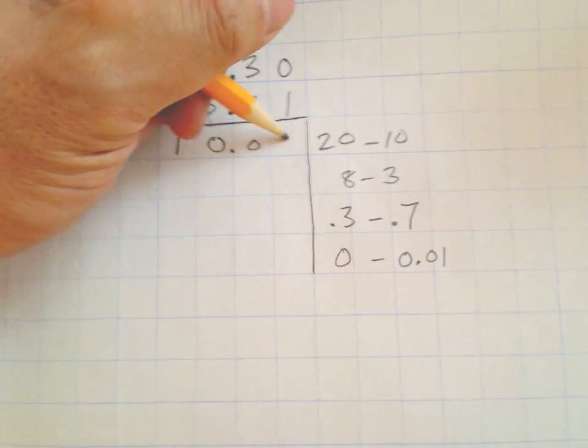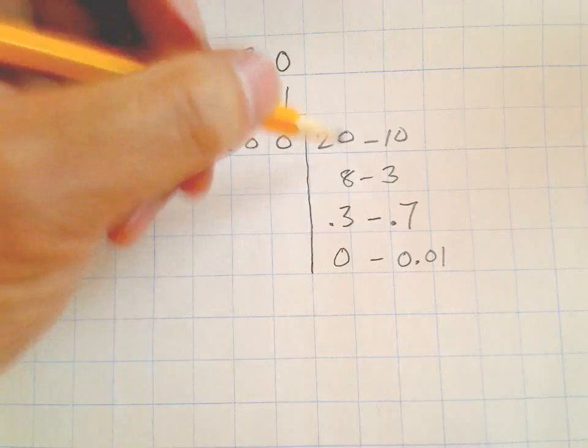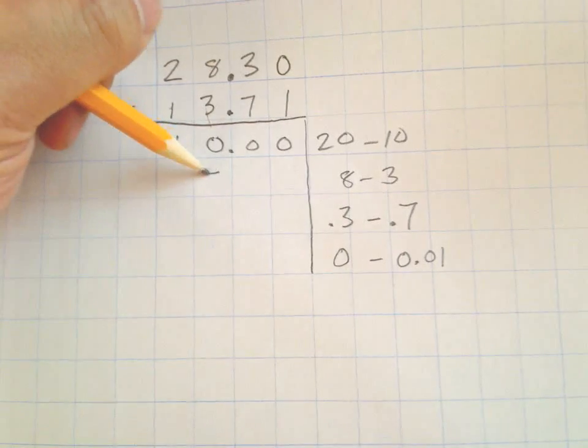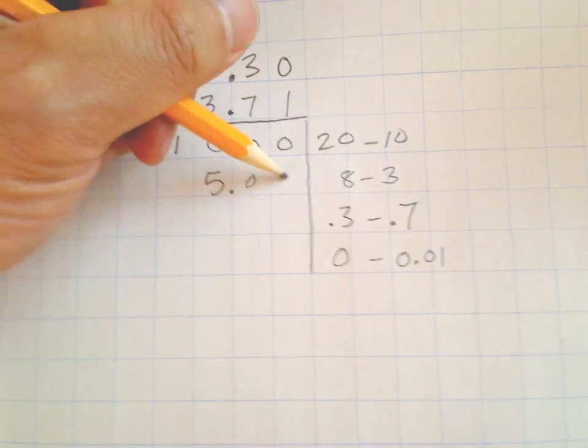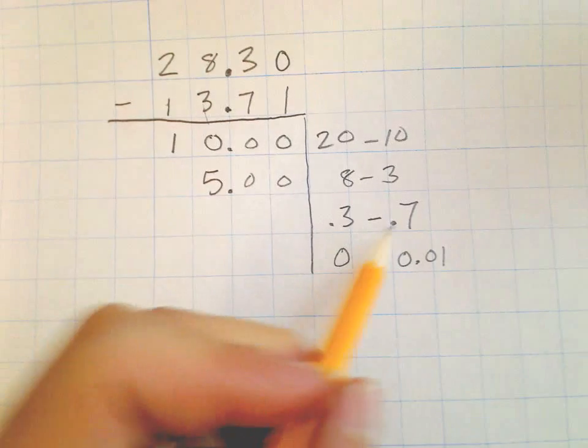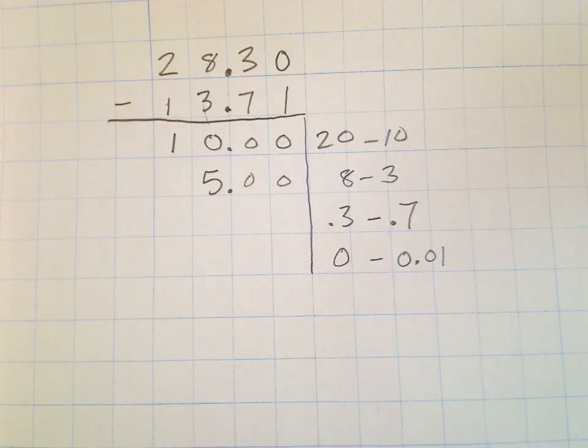8 minus 3, again a simple math problem, 8 minus 3 is 5. Make sure you've got it in the ones place. 3 tenths minus 7 tenths, well now that's a little trickier.